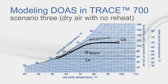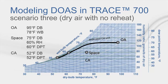Looking at the psych chart during the cooling design day, the DOA unit cooling coil dehumidifies the outdoor air resulting in a dew point that is drier than the space. Since this DOA has a controller with dew point optimization, the dew point leaving the DOA can float up to 60 degrees dew point while maintaining adequate humidity levels in the space, which is set to 60% in this scenario.